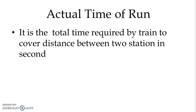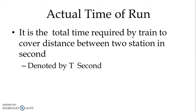Actual time of run is the total time required by the train to cover the distance between two stations. It is denoted by T and is measured in seconds.